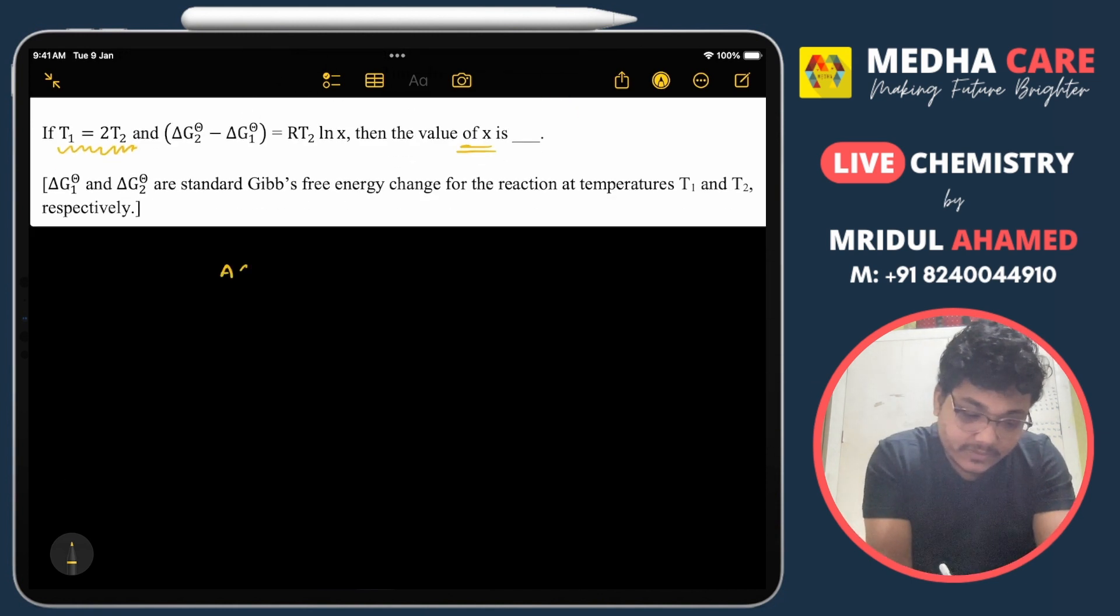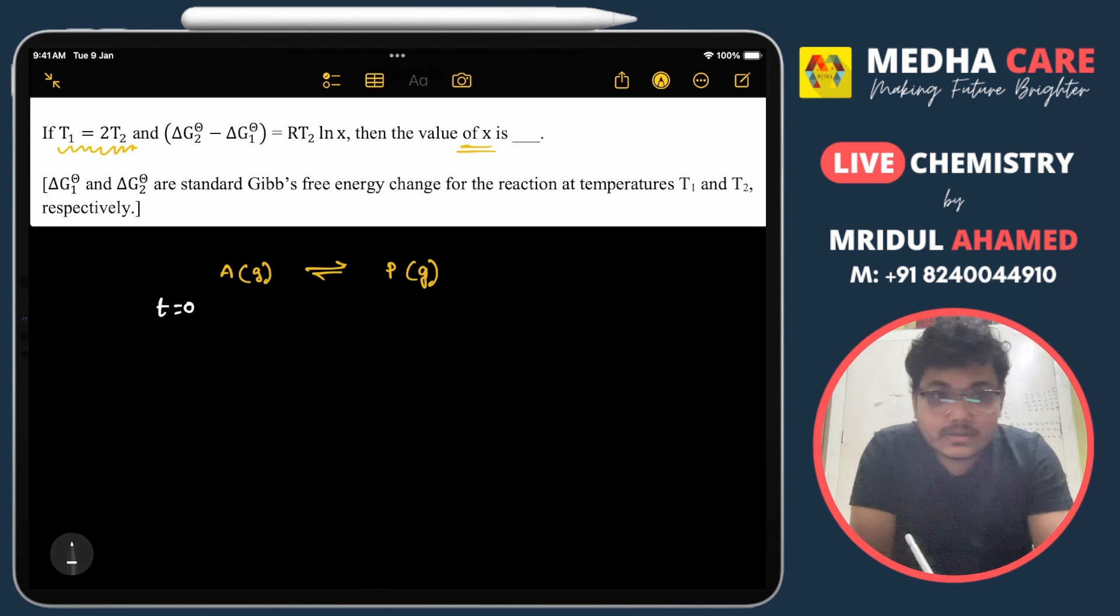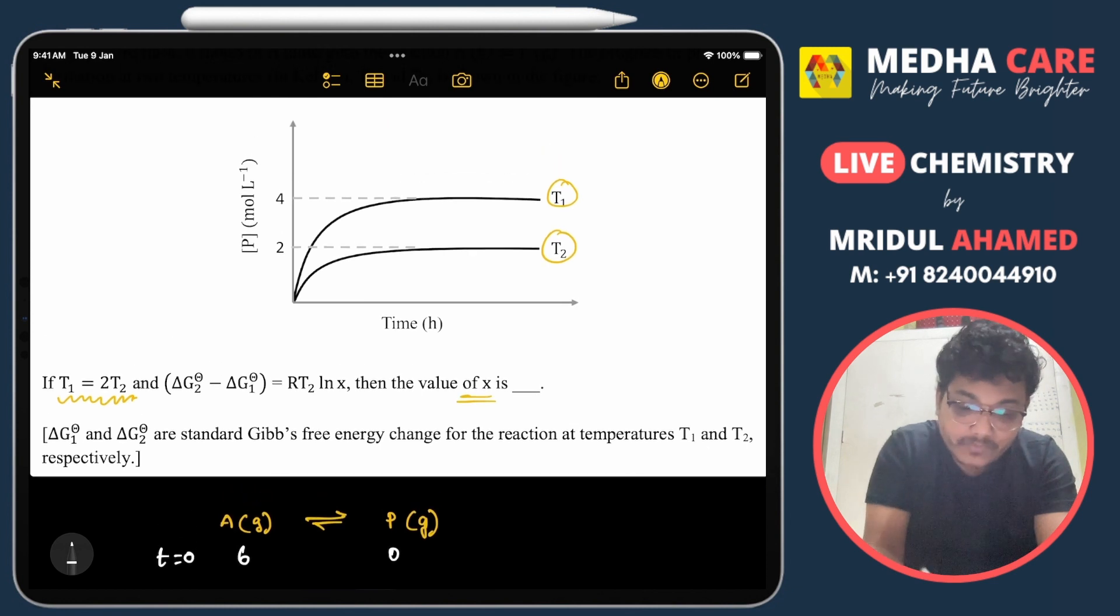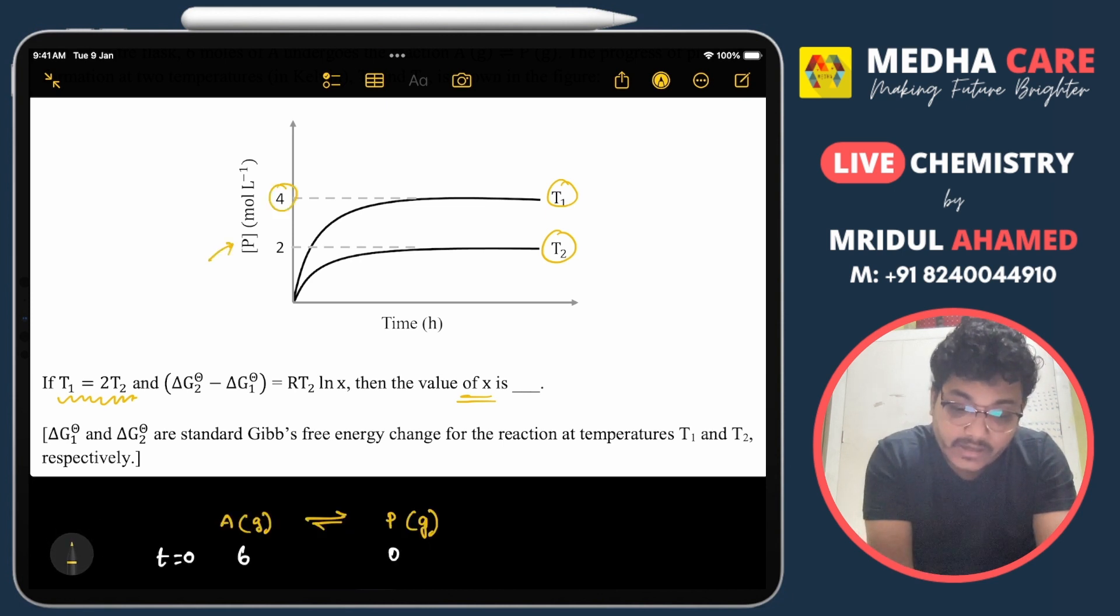Let us start. From A we are getting the product P. Initially at t=0, we have 6 moles of A and 0 moles of P. But here you can see the product concentration is changing. The product concentration is 4 at T1 temperature and 2 at T2 temperature.